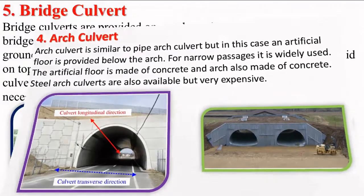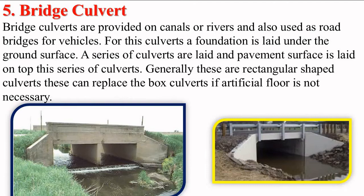The last type is bridge culverts. Bridge culverts are provided on canals or rivers and are also used as road bridges for vehicles. For these culverts, a foundation is laid under the ground surface. A series of culverts are laid and a pavement surface is laid on top of the culverts. Generally, these are rectangular in shape. These can replace box culverts if an artificial floor is not necessary.